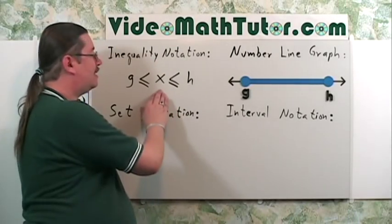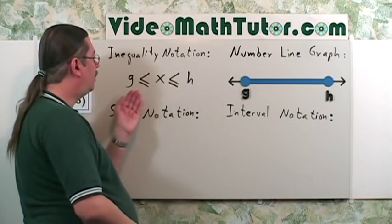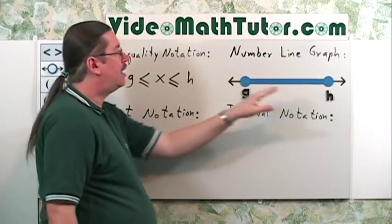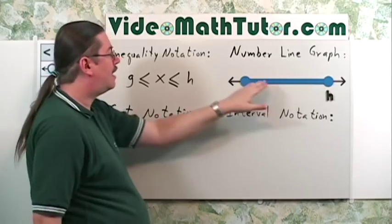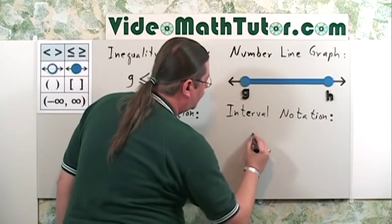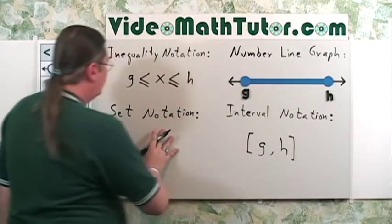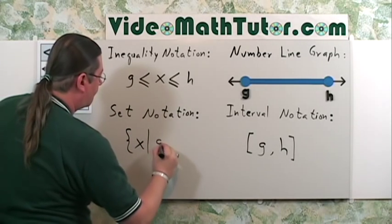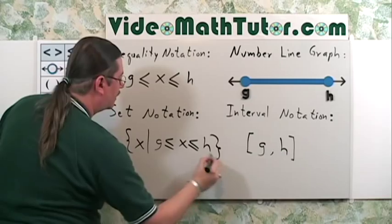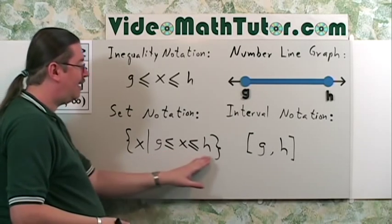Here we have x is in between g and h inclusive. You use the word inclusive when you include both endpoints. For the number line graph, it goes from g to h with closed dots at both ends and everything in between shaded. For interval notation, since both are closed dots, use square brackets: from g to h. For set notation: the set of all x's such that x is in between g and h inclusive.